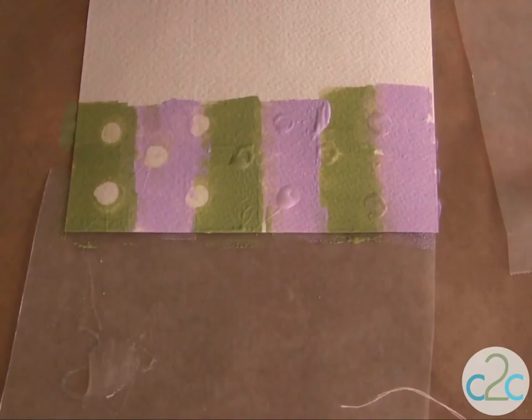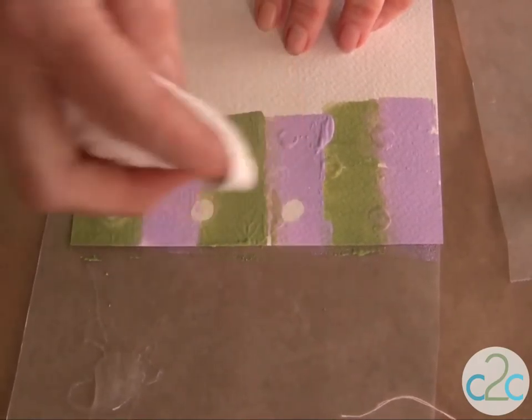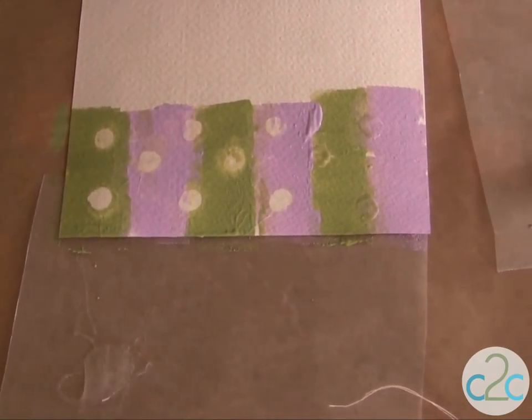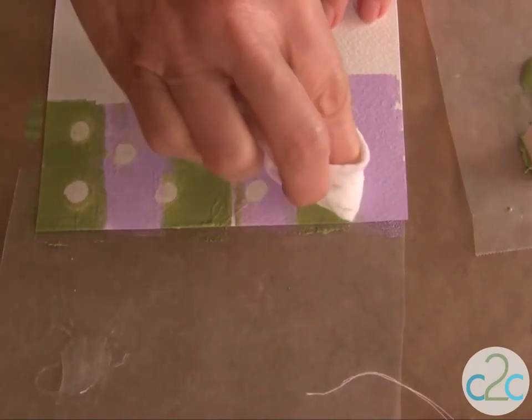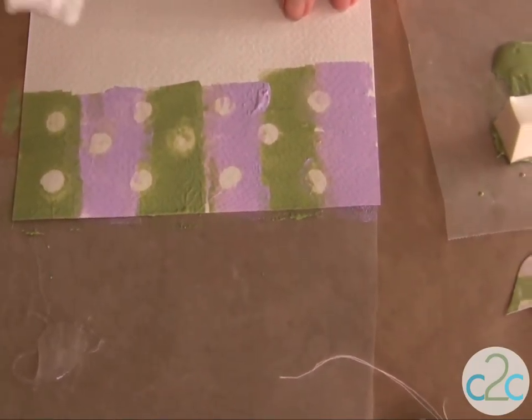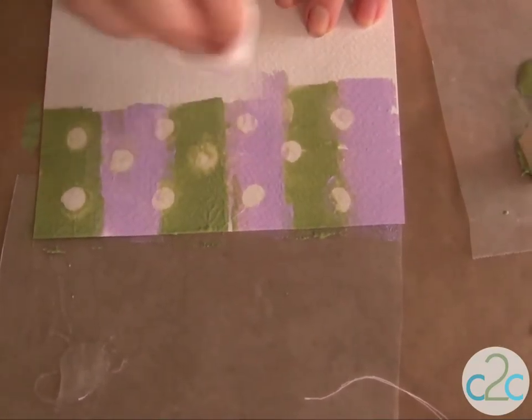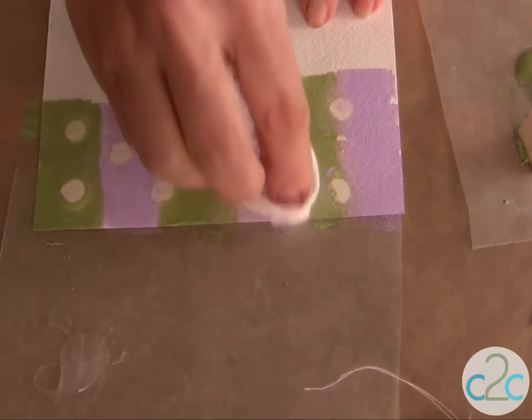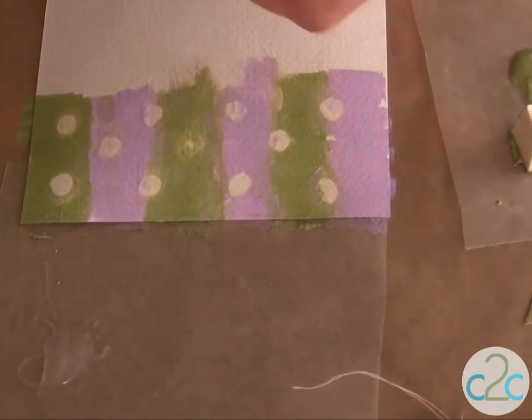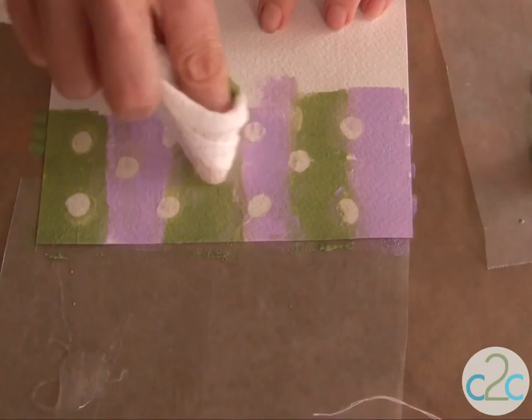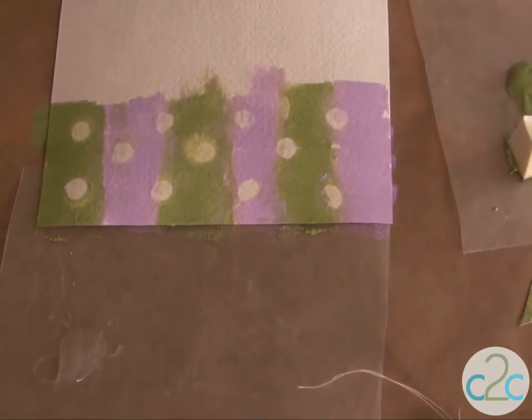Next you take your wet wipe and you start wiping the paint away where the glue was. Isn't that cool? So you can create your own designs. My pattern today as I mentioned is polka dots. I wanted something really simple but if you're artistic you could draw other designs.